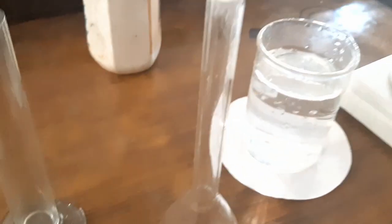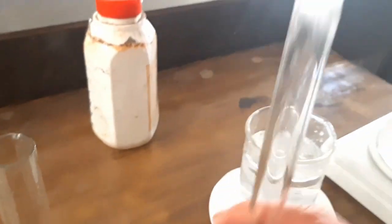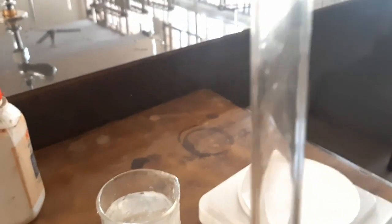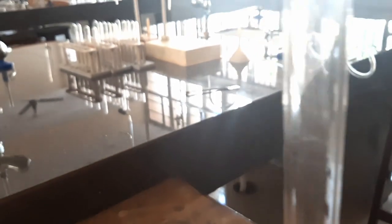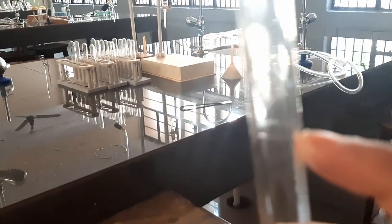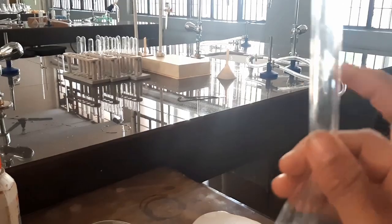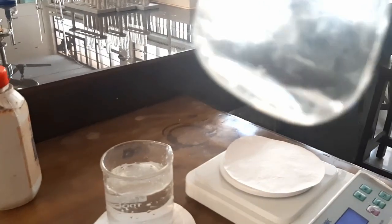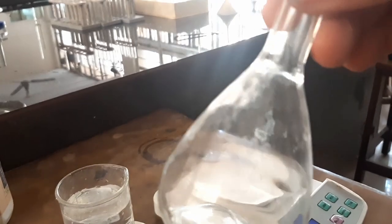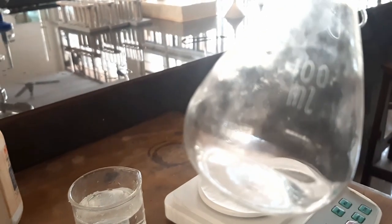Now before we start the measurement, just look at this. We have a volumetric flask, and if you can see carefully, there is a mark here on the neck of the volumetric flask. You can read 100 ml on the bulb here.